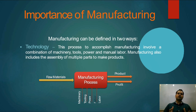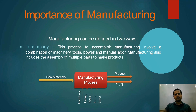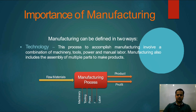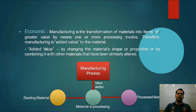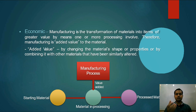The importance of manufacturing can be counted in two types: first from the technology point of view, and second from the economic point of view. In technology, we use different technologies available in our country and enhance them. In economics, when we make changes to raw material, its value increases. For example, a diamond — when it is mined its value is low, but after cutting and finishing, its value increases.